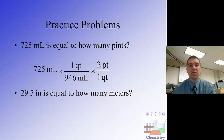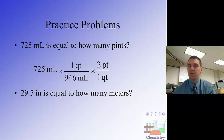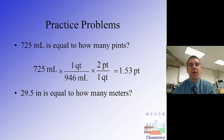Remember with factor-label, you set up your conversion factors so that the units you want to eliminate cancel out, and the units you want to keep remain. The conversion factors are equivalent values — anything divided by itself is 1, and you can flip them as needed to cancel units. Doing the math: 725 times 2 on top, divided by 946, gives us a final answer of 1.53 pints with proper significant figures.